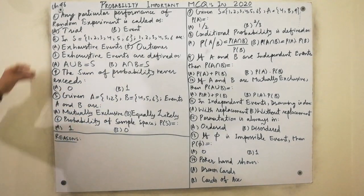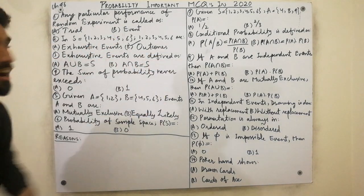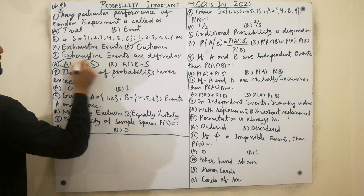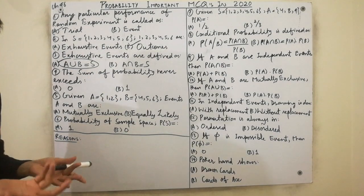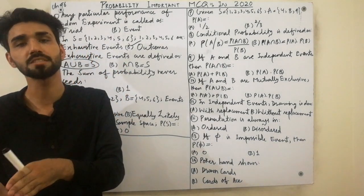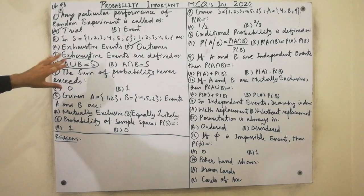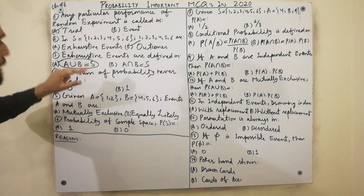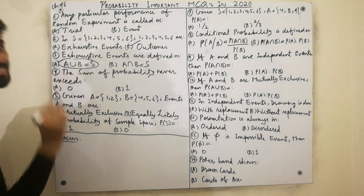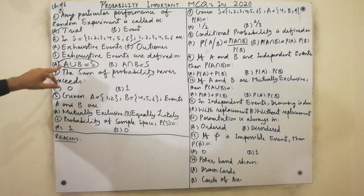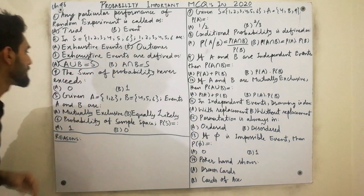The third MCQ is also very important: exhaustive events are defined as A union B is equal to sample space. Each possible subset of the sample space is called an event. A union B always equals the sample space — for example {1, 2, 3, 4, 5, 6}. Must remember: A union B = sample space is called exhaustive events.